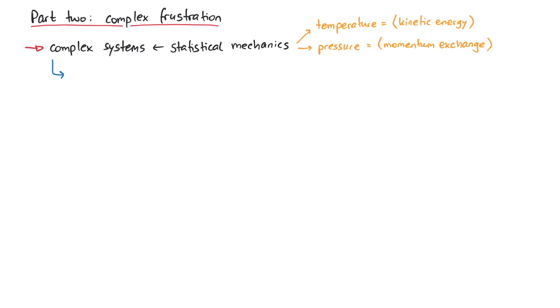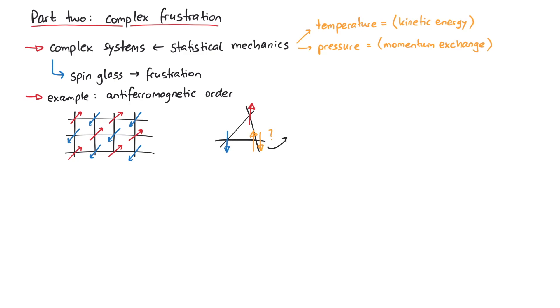One example of a complex system is spin glass, which exhibits a phenomenon known as frustration. Let's consider a simple example. In a square lattice, anti-ferromagnetic ordering can be realized very easily. But what about a triangular lattice? If the first spin is up, then the second spin must be down. But then, how do we align the third one? This is called frustration, and a similar situation arises in spin glass.